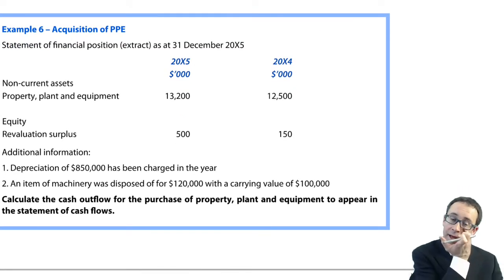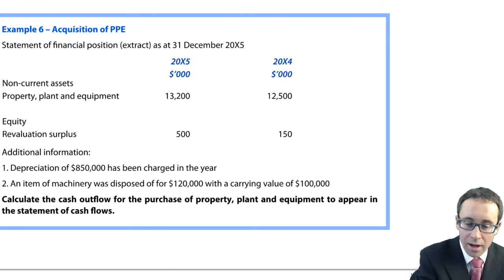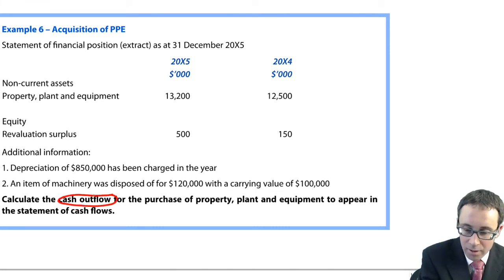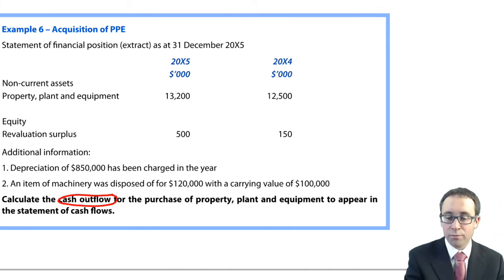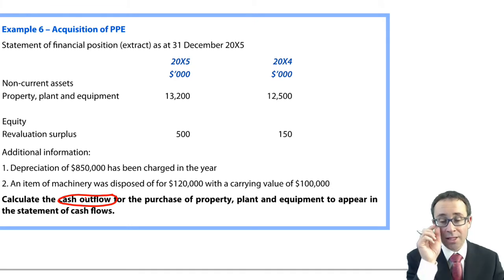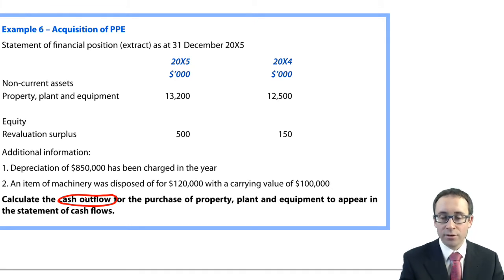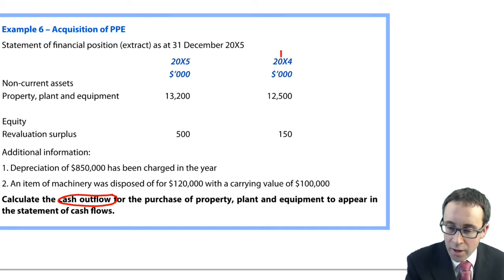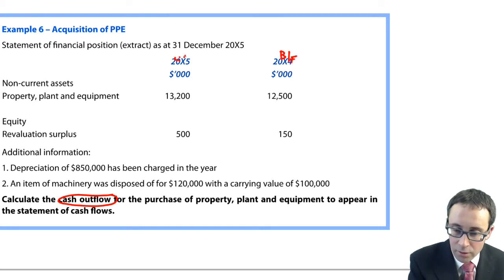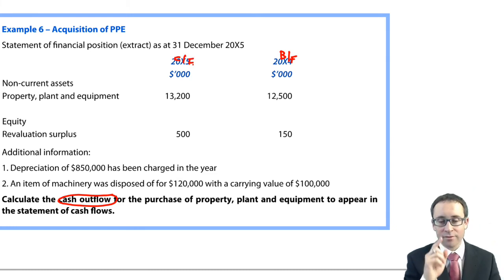So let's go through and look at the example — the acquisition of PPE. It wants you to work out the cash outflow for the purchase of property, plant and equipment to appear in the statement of cash flows. We're going to have to draw up a T-account. You've got your opening figures for 20X4 and your closing figures for 20X5.